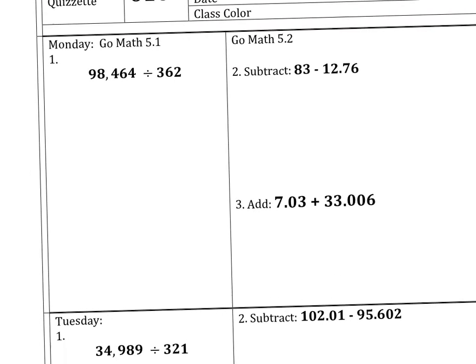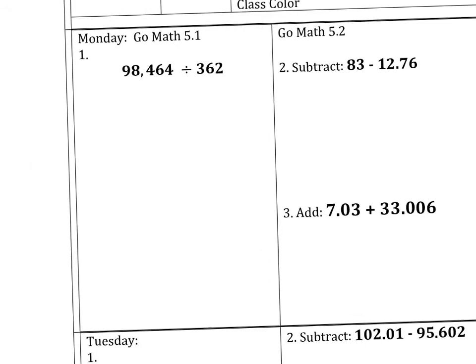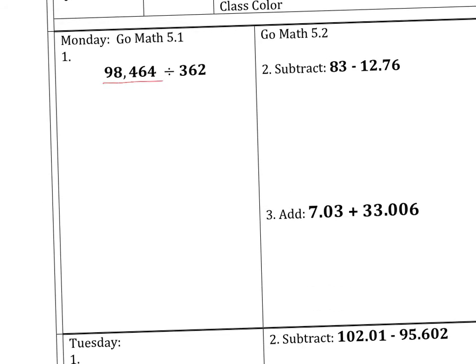Number one is division of decimals. So what you're going to do is you're going to write the first term inside of the divisor. And then 362 goes on the outside. So now you have to find how many times 362 goes into 9. That's 0 times. Does 362 go into 98? No. Does 362 go into 984? Probably.